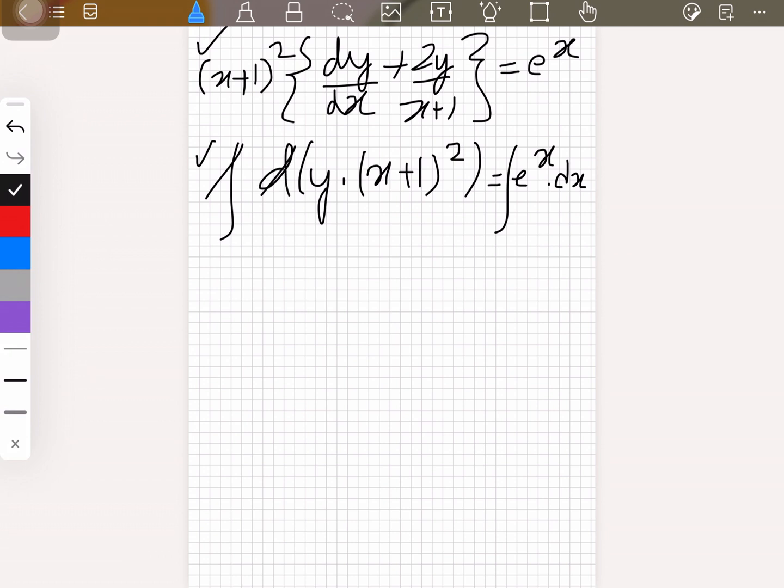Integration and derivative cancel each other out, so what we get is y(x+1)^2 = e^x + c. So this is the final answer. You can, if you want, bring e^x to the other side and things like that, but you don't have to.